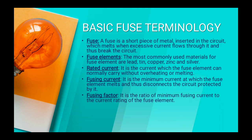Fusing factor. It is the ratio of minimum fusing current to the current rating of the fuse element. Maximum fusing current means the current at which the fuse melts, and the current rating of the fuse element means the normal rated current at which the fuse can operate without melting. So fusing factor equals minimum fusing current divided by current rating of the fuse.